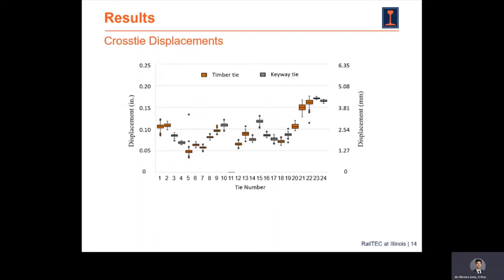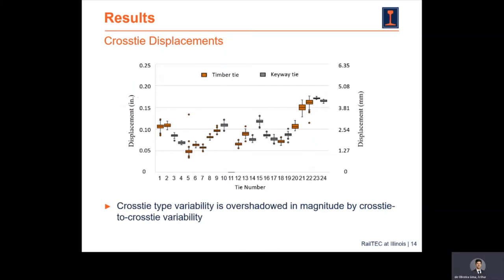Looking at results for crosstie displacements shown in box plots: 50% of all data is inside the center box, the line in the center is the median value, and the whiskers and dots represent the spread and outliers. The results for each individual tie show that displacements vary quite a bit. The crosstie variability between timber and keyway is overshadowed by the magnitude of cross tie-to-cross tie variability, and no clear pattern is observable in how one type varies versus the other.